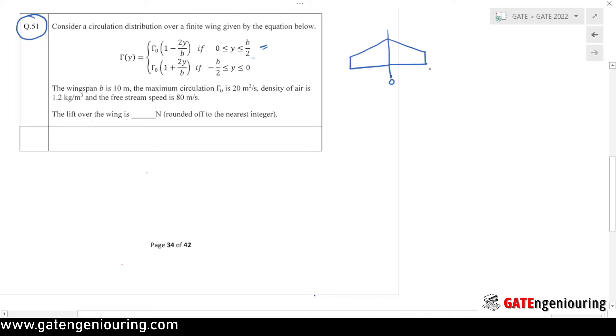These are for the right wing from here to here, and this is minus b by 2 for the left wing. The left wing equation is this and right wing equation is this, so the total will be just to find out by integrating over the ranges and total circulation we will get.